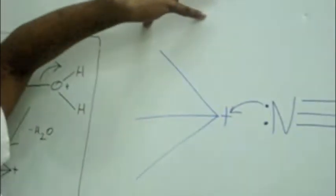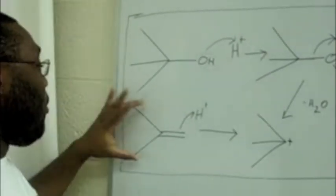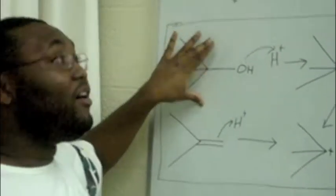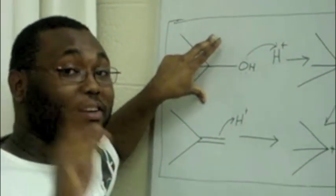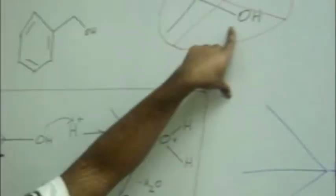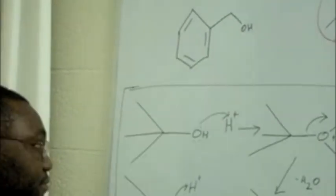The first step in this process is generation of a carbenium ion. Now, the carbenium ion can be generated from an alcohol or an alkene. The alcohol, however, has to be tertiary or secondary — never primary, unless it's benzylic, because that can form a stable cation.